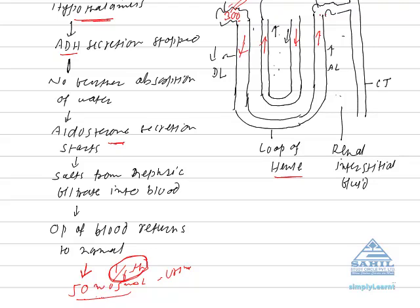The descending limb of the Loop of Henle is permeable to water but not to salts. Due to the exit of water from the nephric filtrate into the blood, the osmotic concentration of the nephric filtrate increases — going from 300 to 400, 500, and finally up to a maximum of 1200. At this level, the nephric filtrate becomes four times more concentrated than blood.